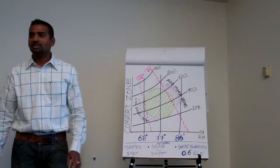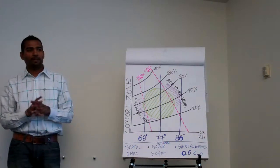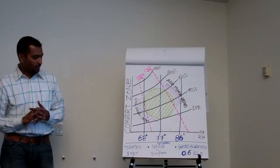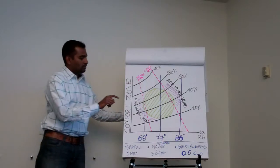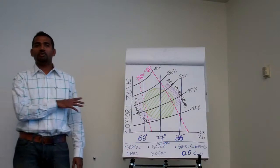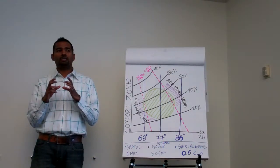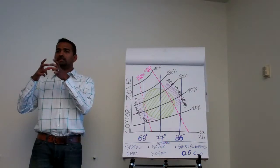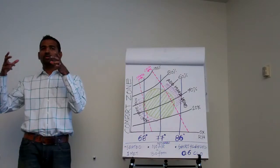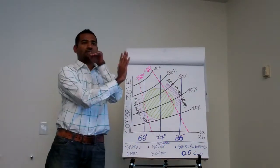This is the psychrometric chart in simple form. It's pretty complicated, but I'm going to try to explain this simply. The reason why this is important is that the comfort zone is always established with a certain set of defined parameters. It is very important for us to understand what that defined set of definitions are in order to establish comfort.